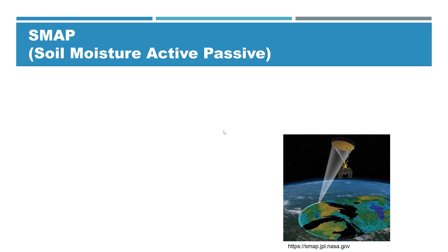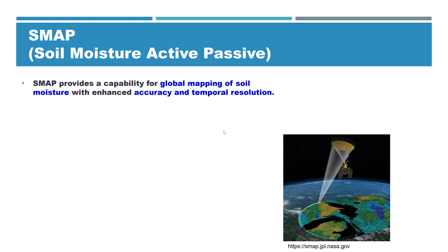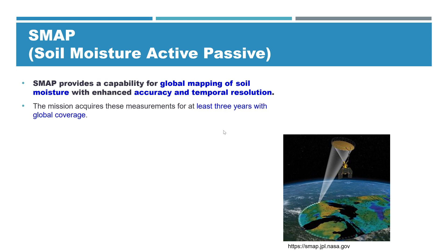So what is SMAP? SMAP is a Soil Moisture Active Passive satellite. It provides a capability for global mapping of soil moisture with an enhanced accuracy and temporal resolution — that is, the frequency of data.